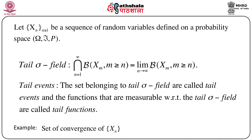Tail events are defined as the sets belonging to this tail sigma field. The functions that are measurable with respect to this tail sigma field are called tail functions. Since we are talking about a tail sigma field, naturally this is a collection of events — all sets belonging to this tail sigma field are called tail events, and measurable functions with respect to this tail sigma field are called tail functions. These three concepts — tail sigma field, tail events, and tail functions — play a major role in stating and proving this Kolmogorov 0-1 law.